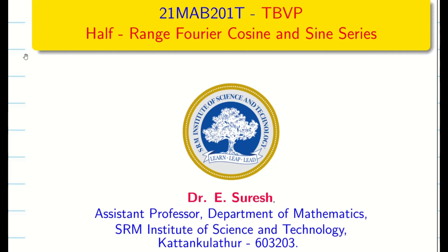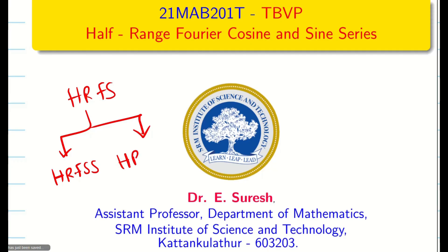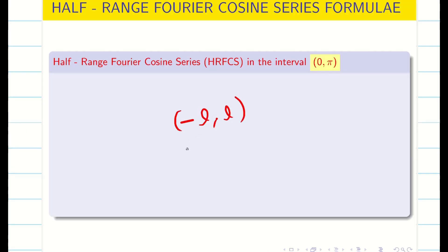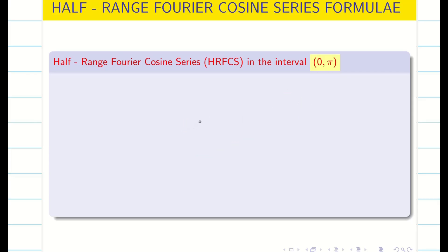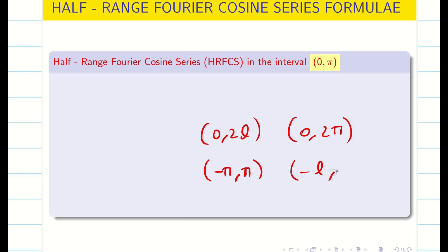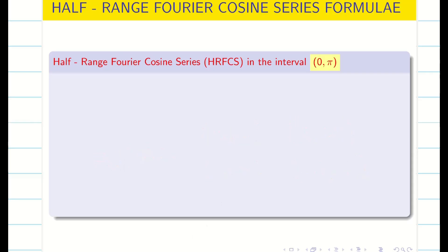Dear students, welcome to the problem solving session on half-range Fourier series. Whenever we speak of half-range Fourier series, it should be split into half-range Fourier sine series and half-range Fourier cosine series. When the limit is minus L to L, 0 to 2L, or minus pi to pi, that is known as full-range Fourier series. Now we are going to deal with problems on half-range Fourier series.